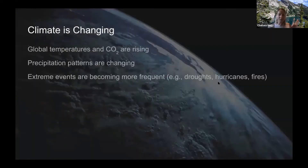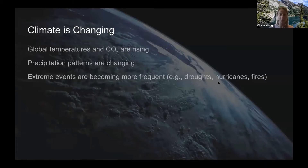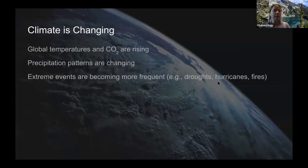Starting very broad and working down to specifics: climate is changing. Global temperatures and CO₂ are rising, precipitation patterns are shifting — some areas getting wetter, others drier — and extreme events are becoming more frequent, including things like hurricanes, droughts, and fire. This is just setting the stage.